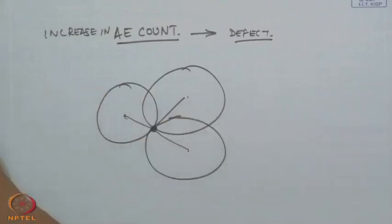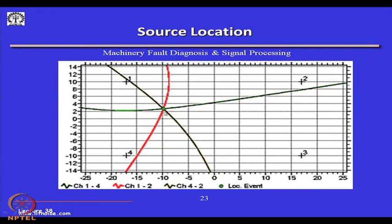Triangulation algorithms are available, and this is one such location output from software. By having multiple AE transducers and doing triangulation, the AE source can be determined. AE has been qualitatively very popular for knowing whether a defect has occurred — the material cries under stress, and these high-frequency cry signals are captured by piezoelectric crystals, processed, and used through software to quantify the AE event or triangulate to find the source.